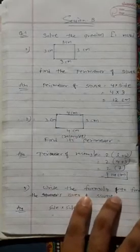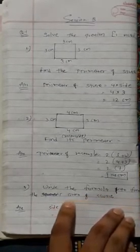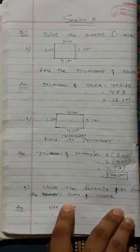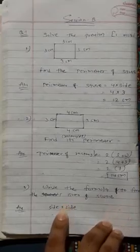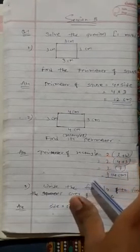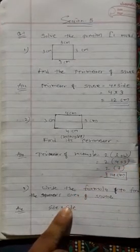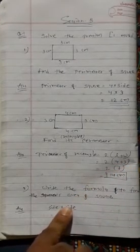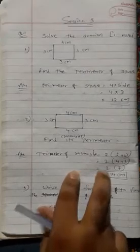Third question: write the formula to find the area of a square. The formula is side multiply side. In a square, whatever answer we get, we write it with a square unit — for example, 12 square cm.